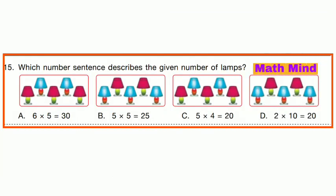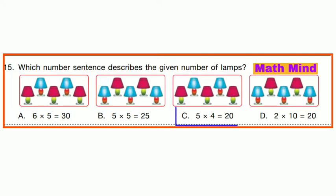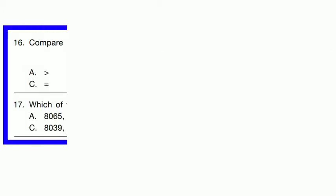Question No. 15: Which number sentence describes the given number of lamps? There are 4 groups and each group has 5 lamps. So 4 × 5 = 20 lamps. Option C is correct.